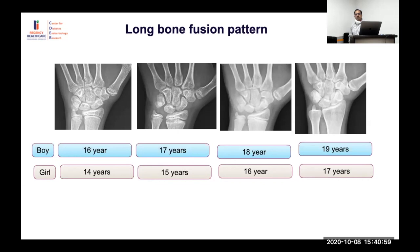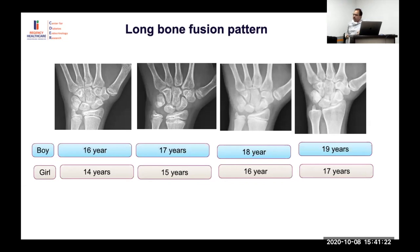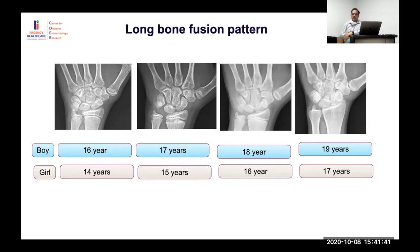In summary by age group: for children under one year, look at just three things — capitate, hamate, and radius. From two to two and a half years, check whether proximal phalangeal epiphyses have appeared and whether carpals like lunate are present. Beyond four years, focus mainly on the comparison between epiphysis and metaphysis.